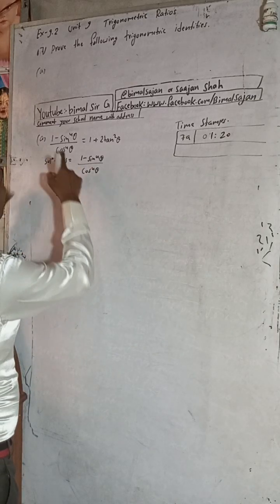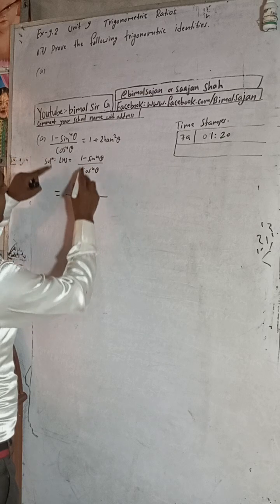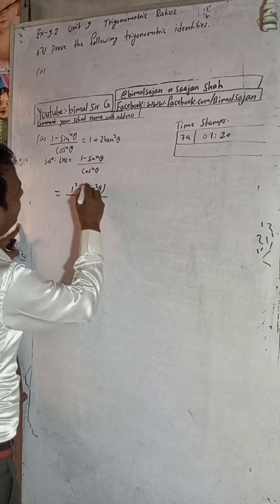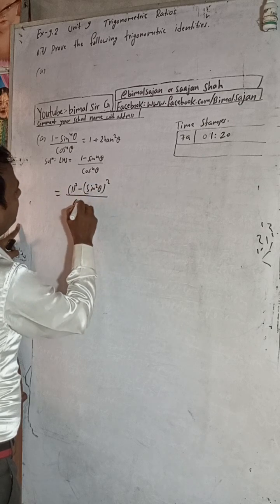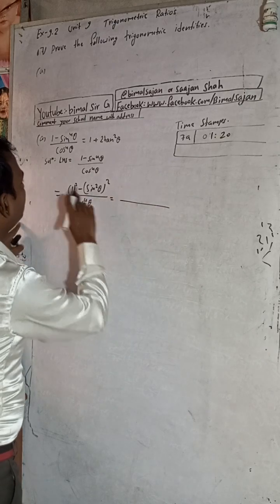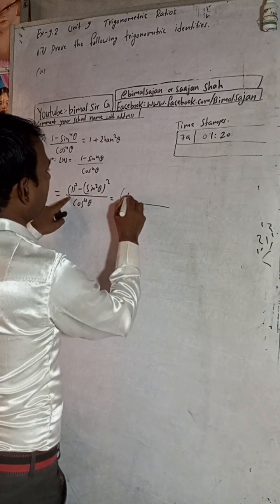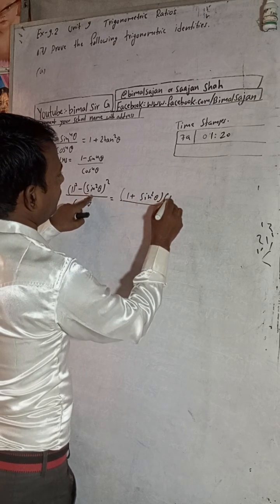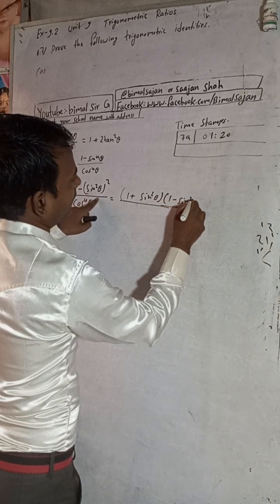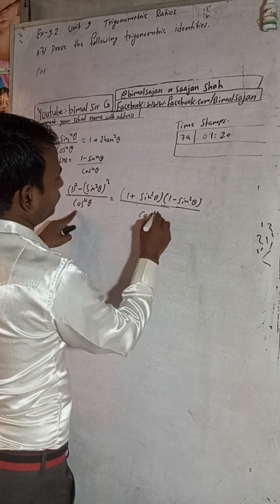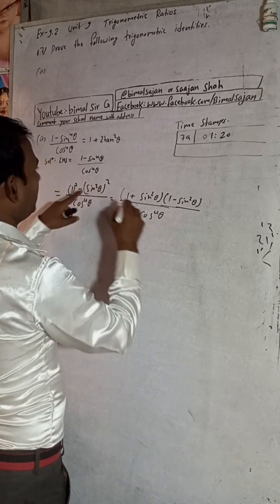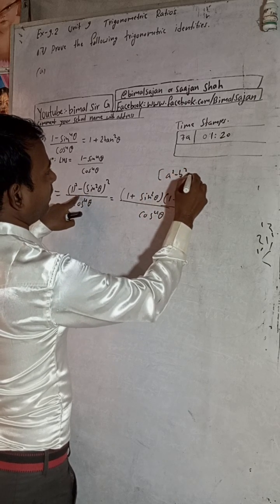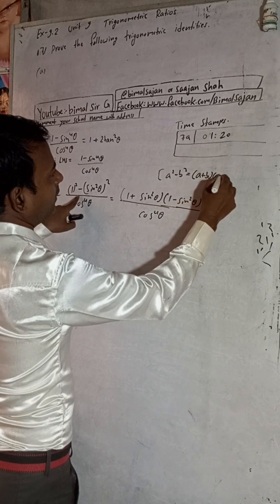LHS is given here: 1 minus sine to the power 4. We can write this as 1 square minus sine square theta, whole square — this is a² minus b² form — divided by cos to the power 4 theta. Applying the formula a² minus b² equals (a+b)(a-b), we get: (1 plus sine square theta) into (1 minus sine square theta), divided by cos to the power 4 theta.